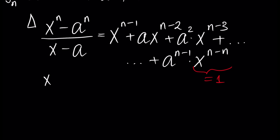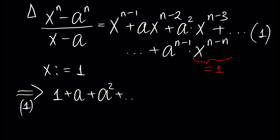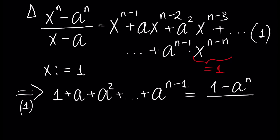If we put x equal to 1, then from equation 1, the right side becomes 1 plus a plus a squared plus so on, a to the power n minus 1. And the left side of our equation becomes 1 minus a to the power n, divided by 1 minus a. And that's all.